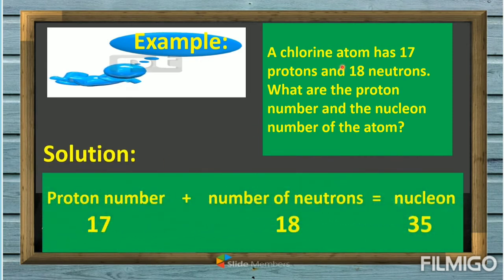Here is the solution. Given: proton number is 17. Number of neutrons is 18. The nucleon number equals 17 plus 18, which equals 35.